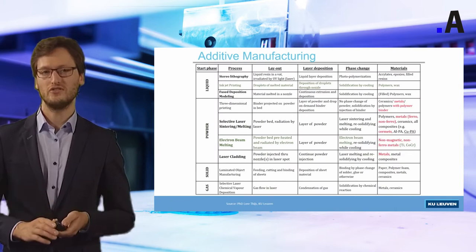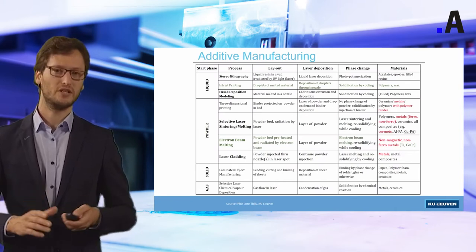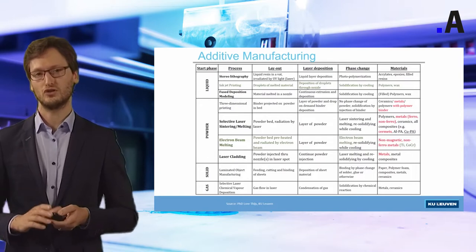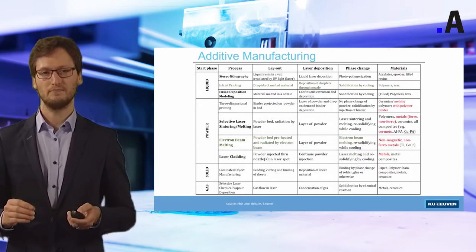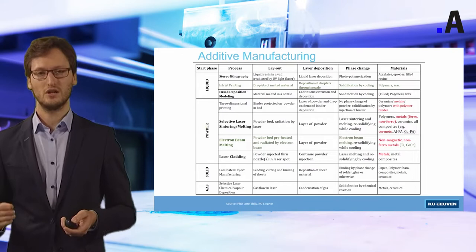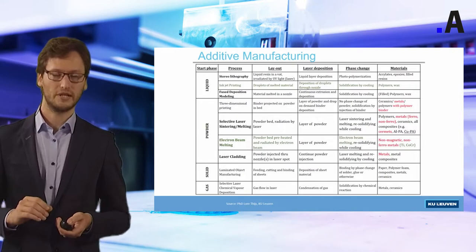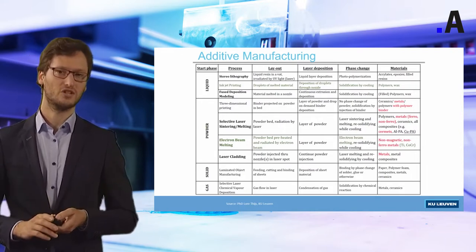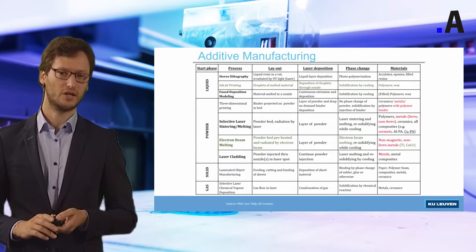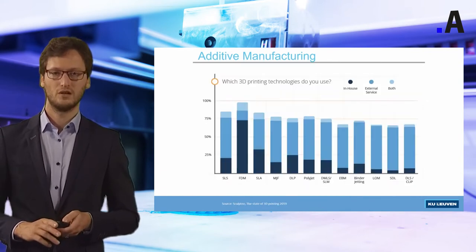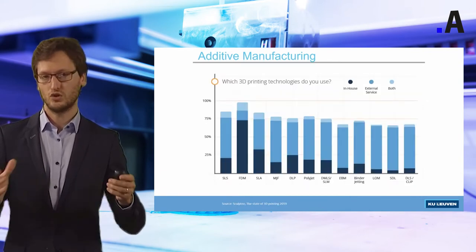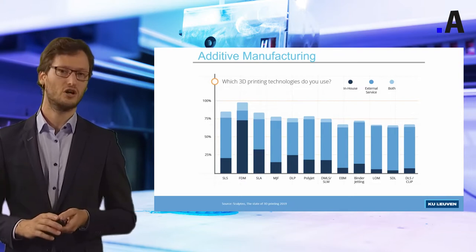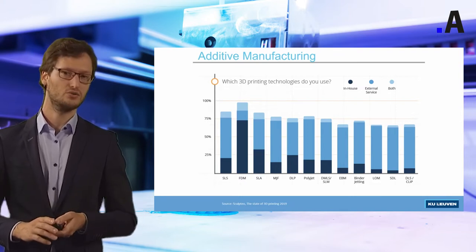Here you can see a table of different 3D printing technologies that are ordered in terms of the starting phase. Depending if we start from a liquid, a powder material, a solid or a gas, you can have many different additive manufacturing technologies. For this short presentation, I looked at which of those technologies are typically used in industry.